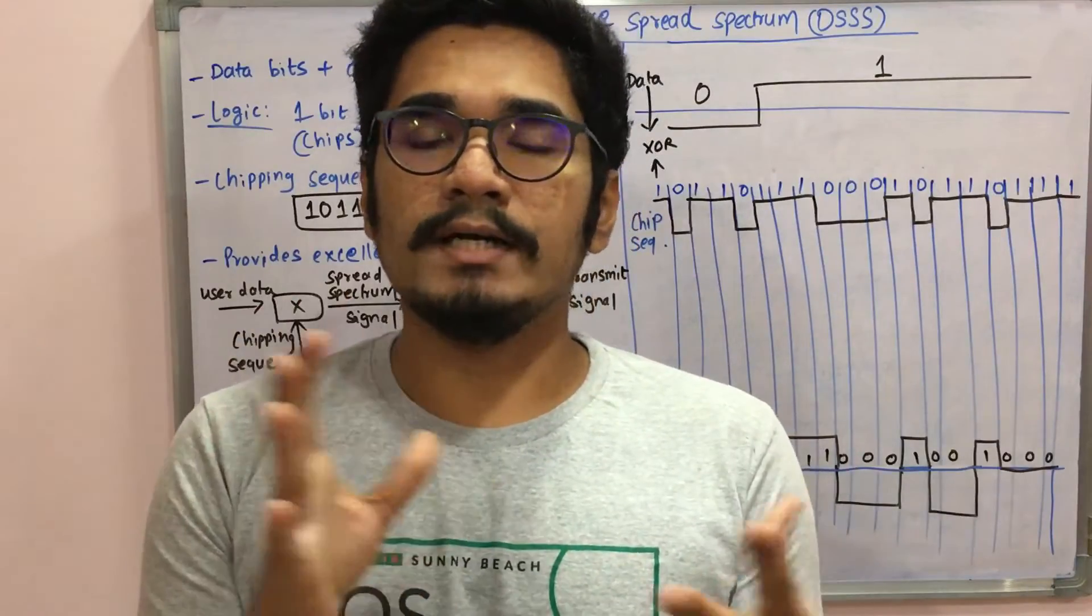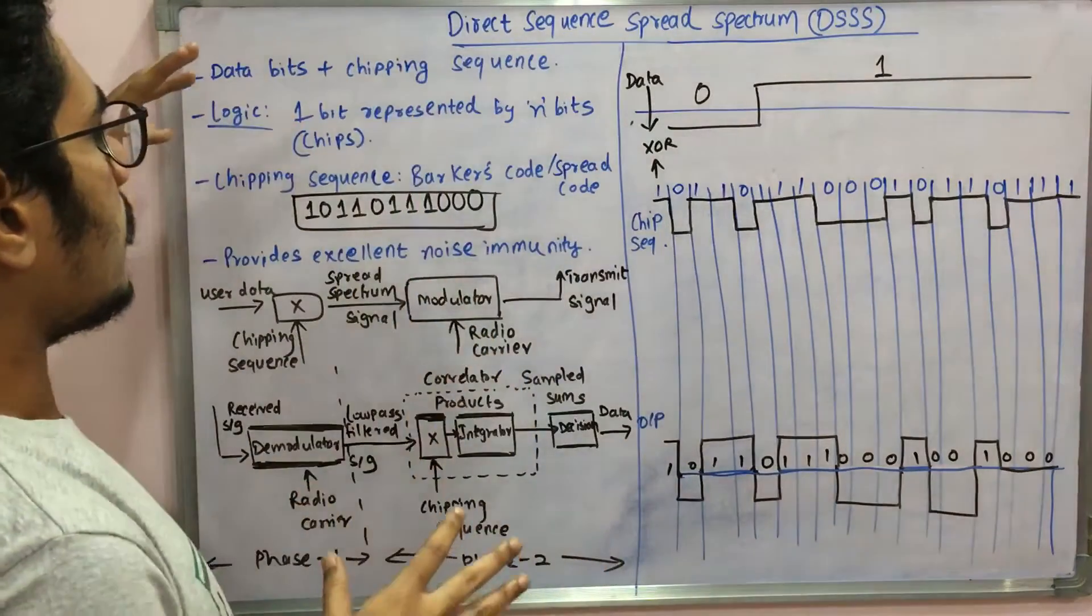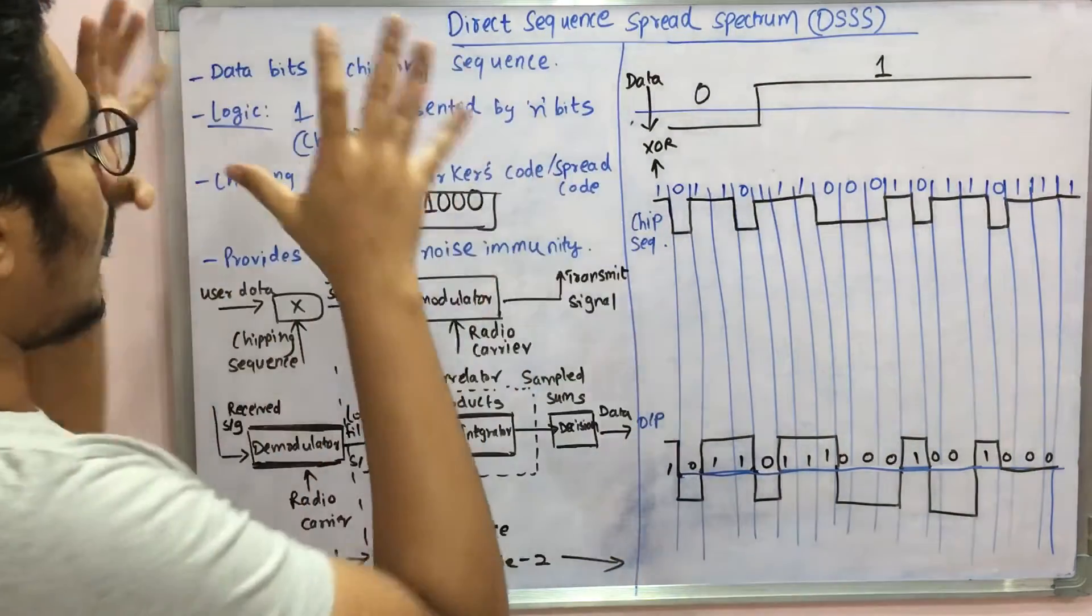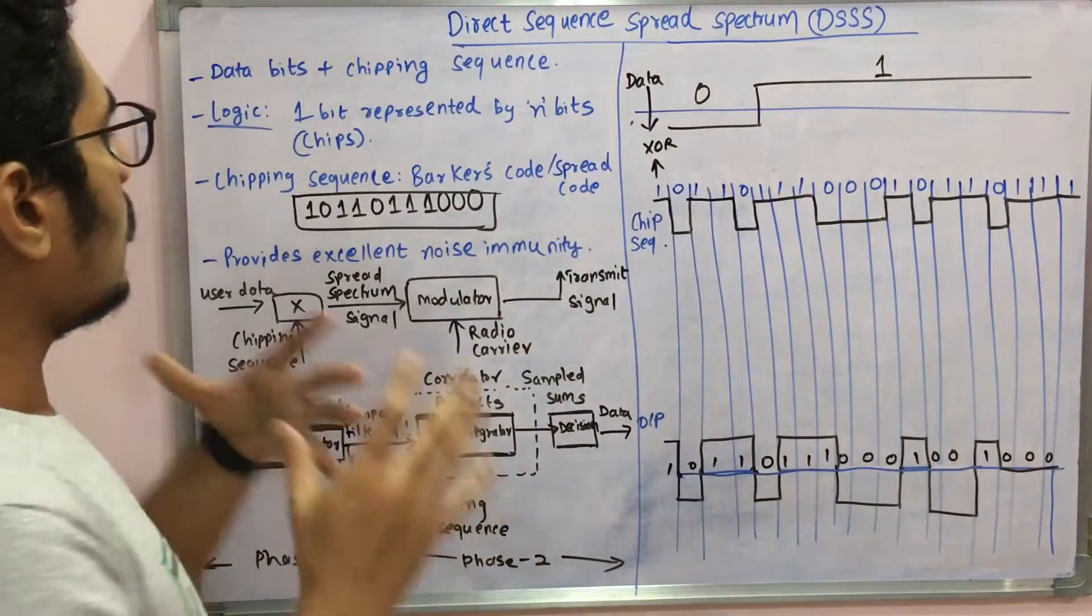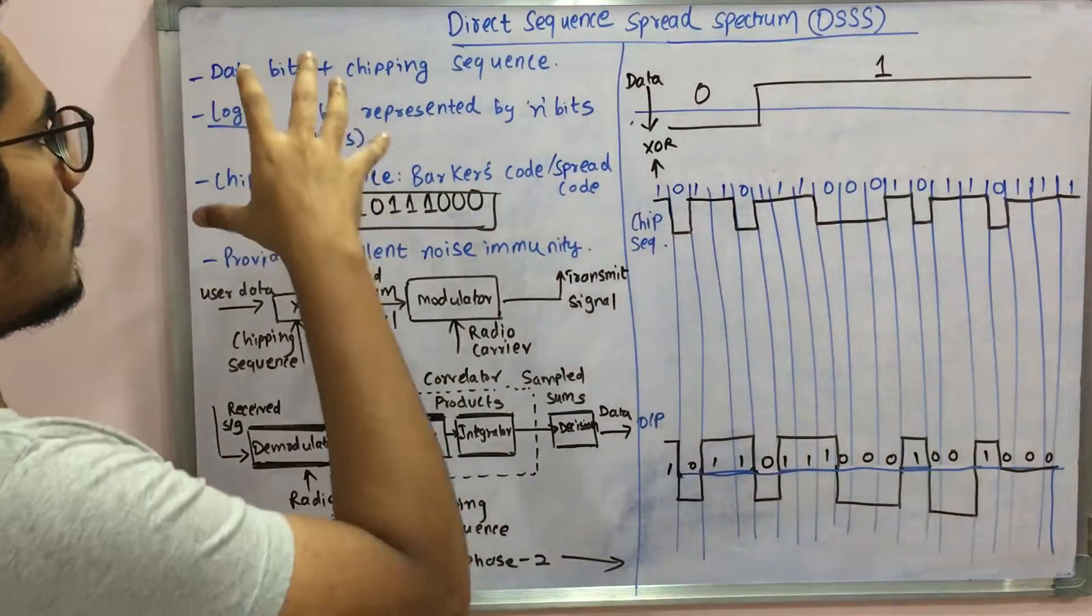The signal will have the data bits as well as some chipping sequence or chipping pattern. The logic here is one bit will be represented by N bits.